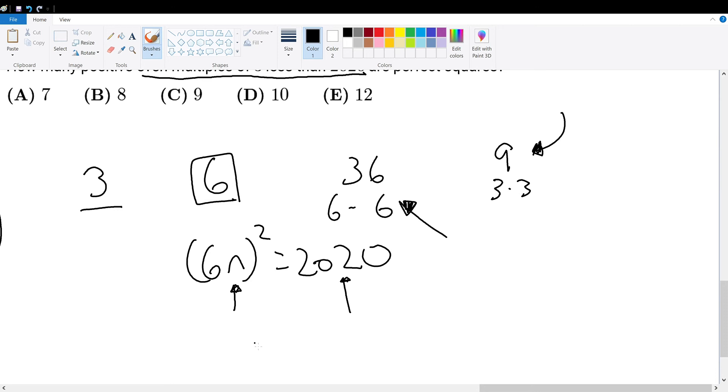So that is what we can find. So this is 36n squared equals 2020. n squared equals 2020 over 36.